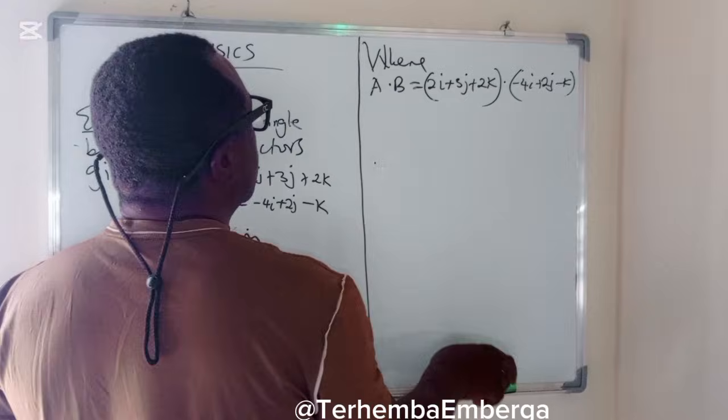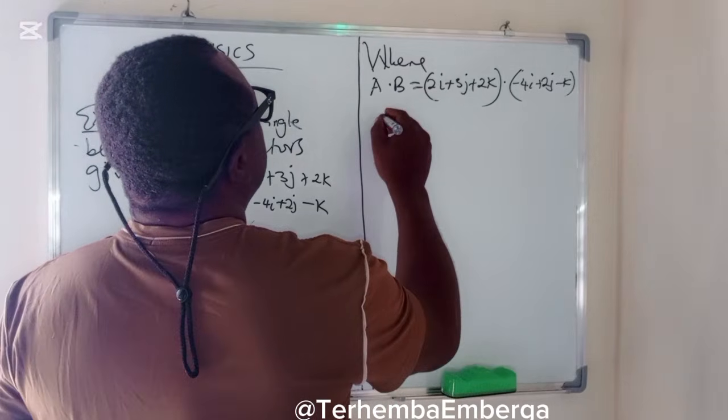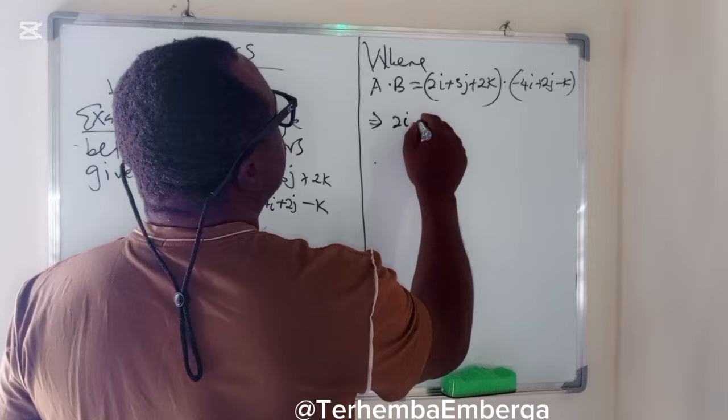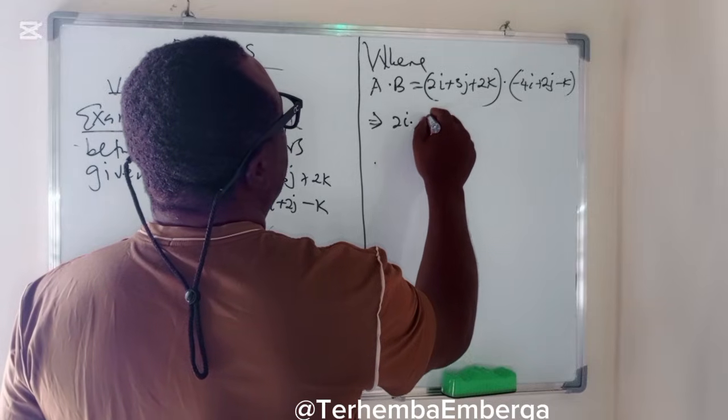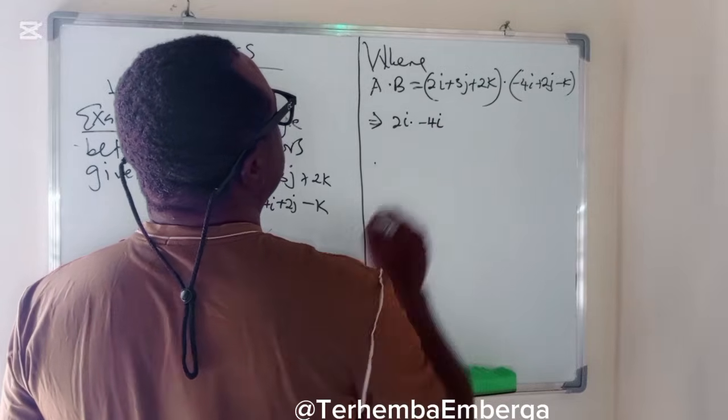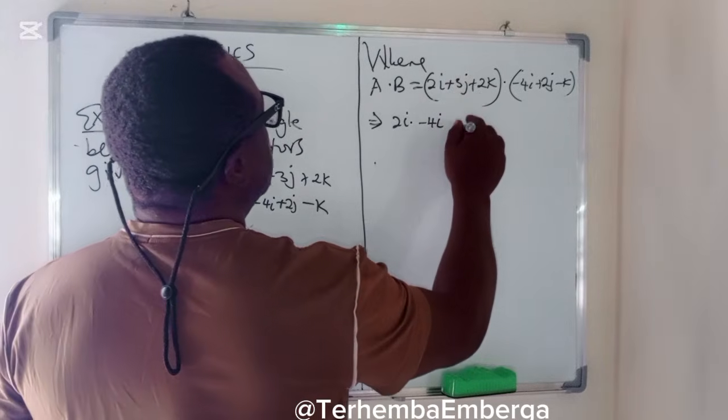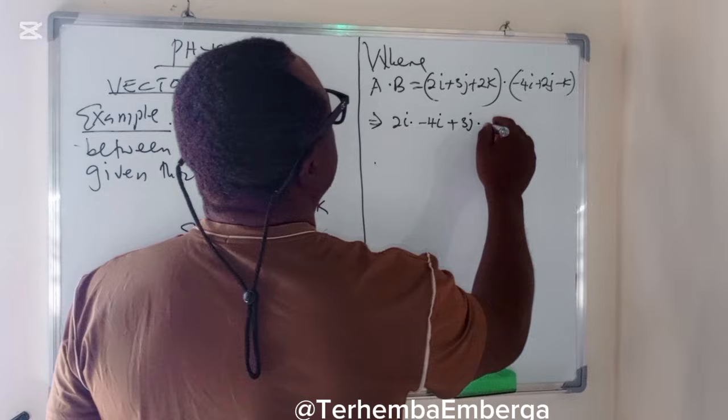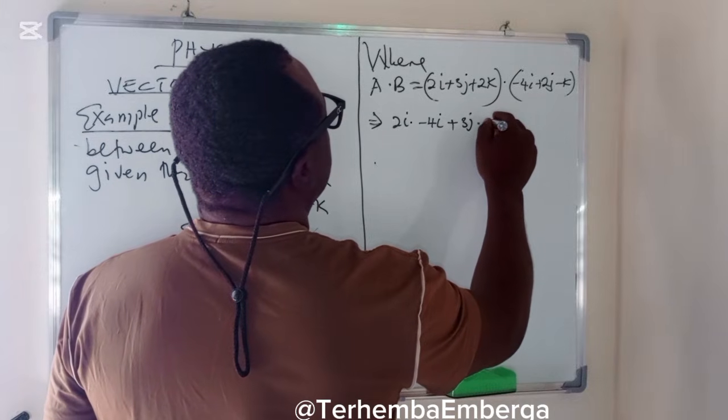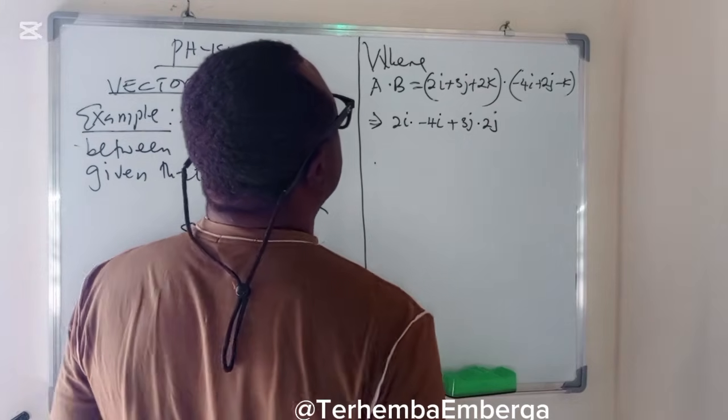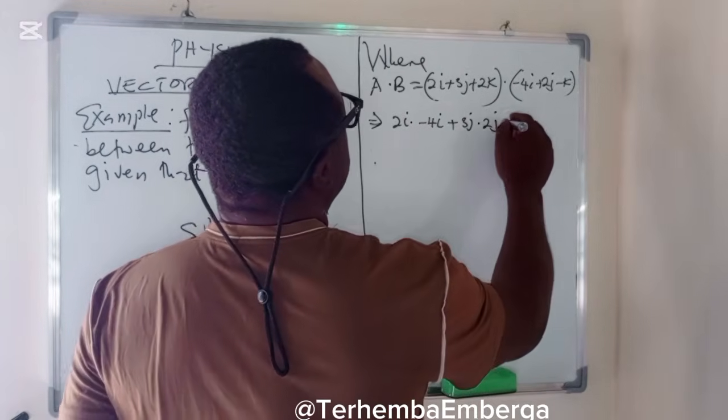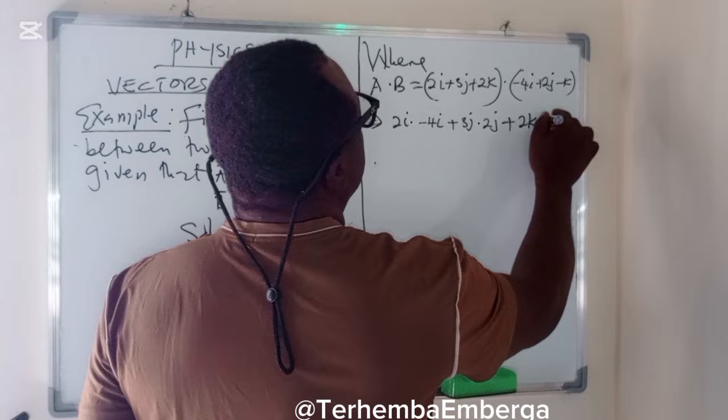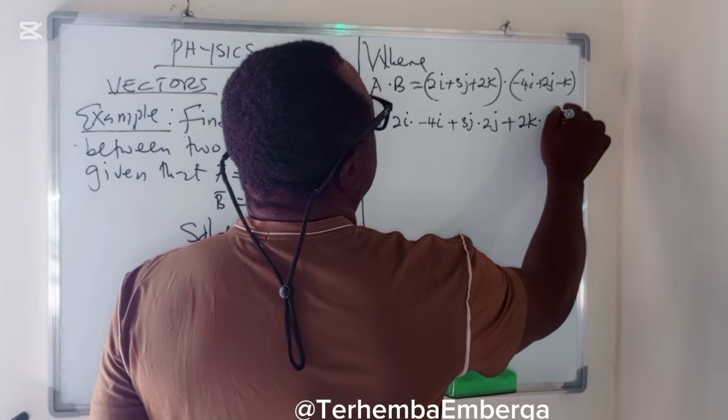So we now have, this implies 2I dot minus 4I. Then we'll move to the J's, plus 3J dot 2J. We'll move to the K's, plus 2K dot minus K.